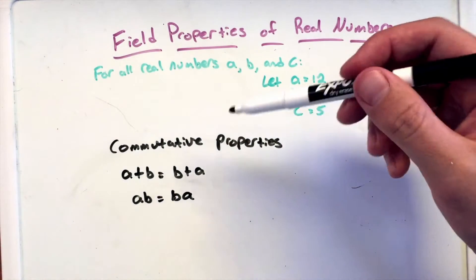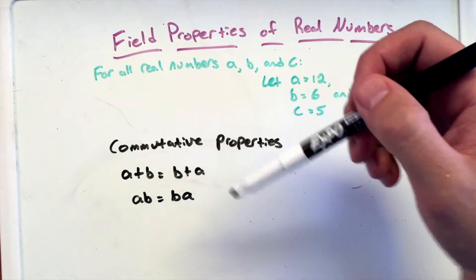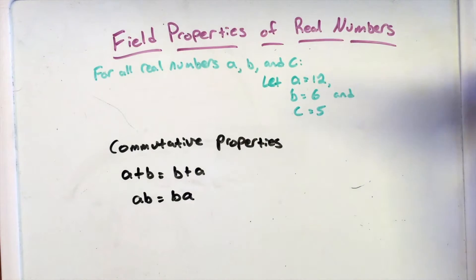And so what that's saying here, this commutative property, is that it really doesn't matter the order in which you add or the order in which you multiply, you will still get the same answer.